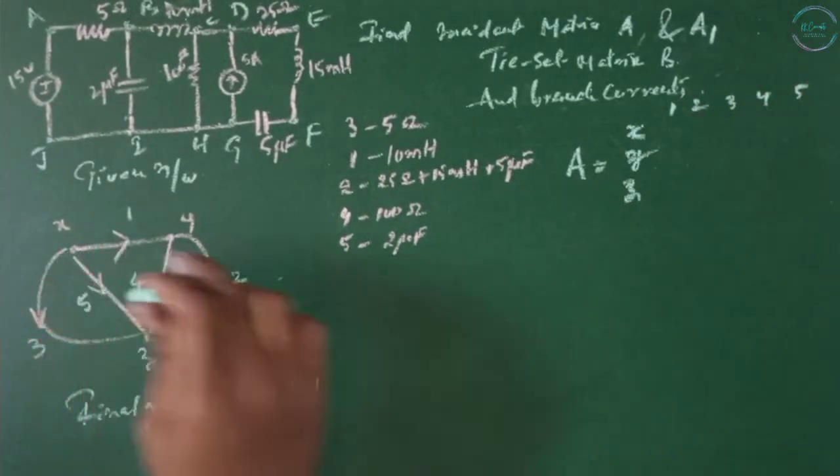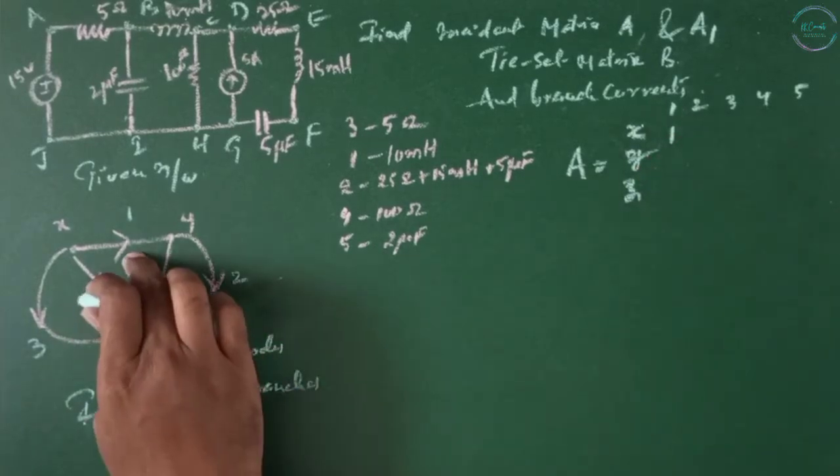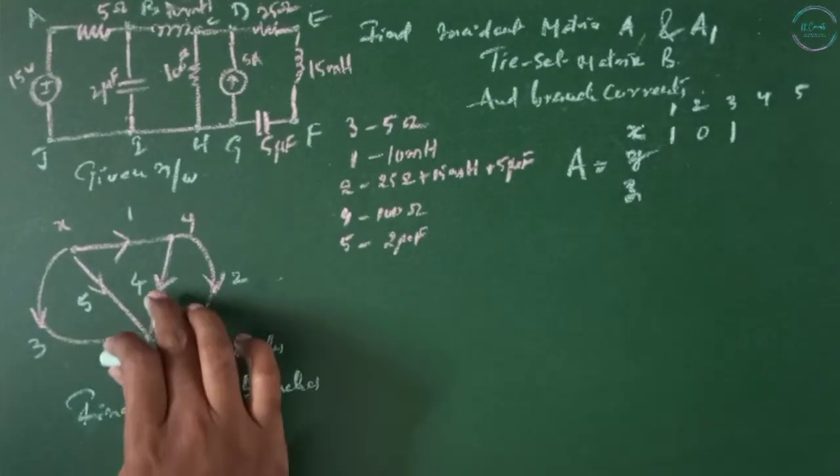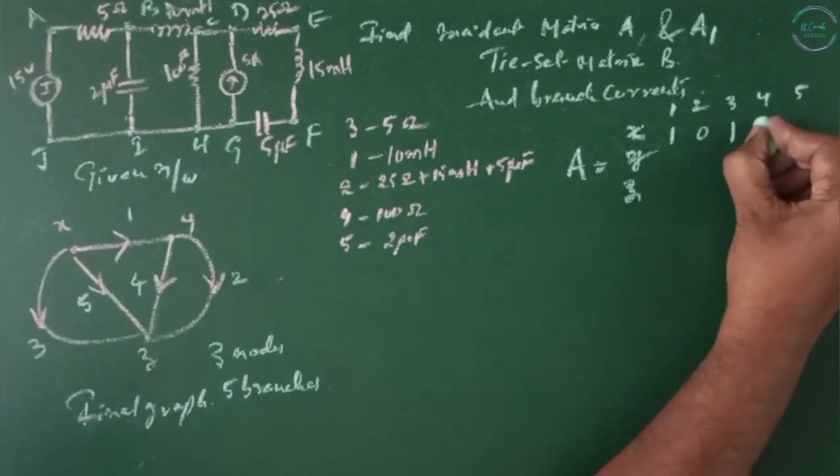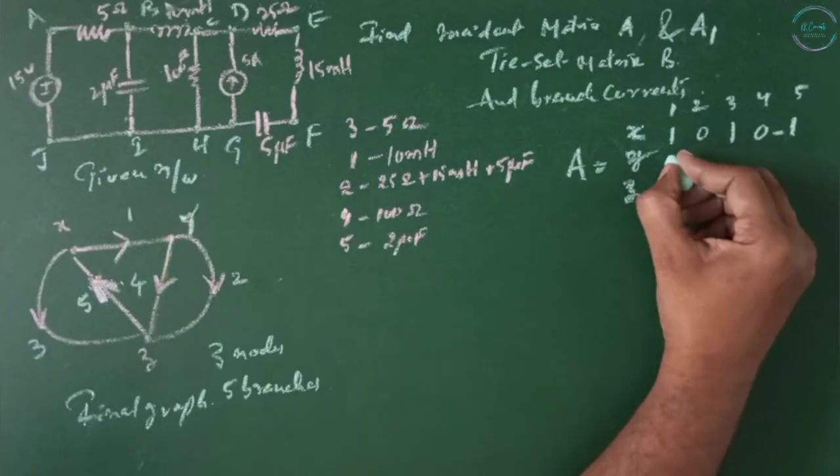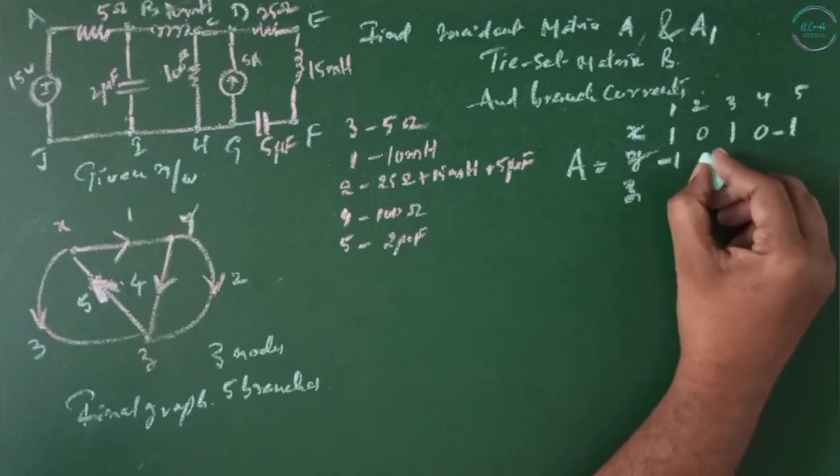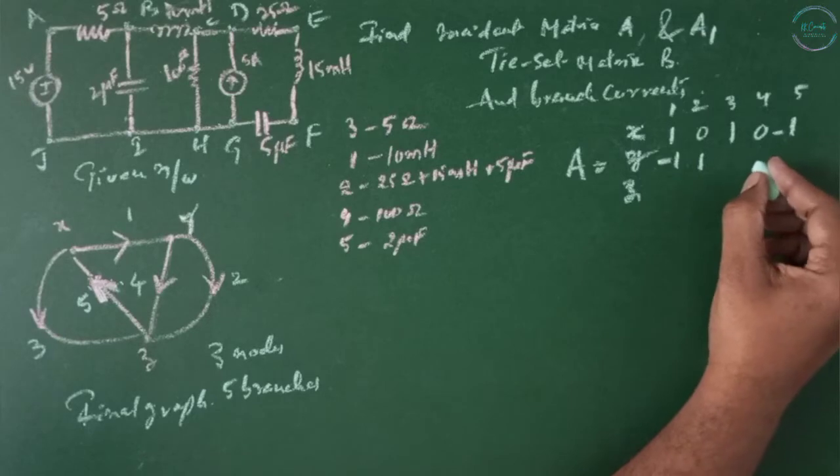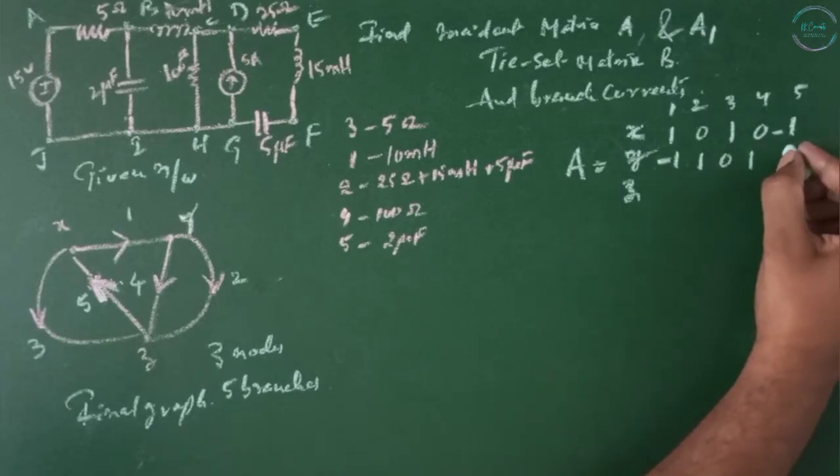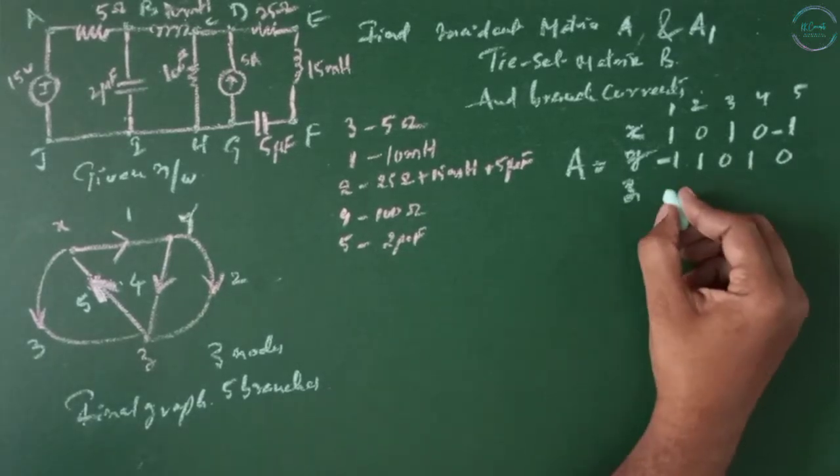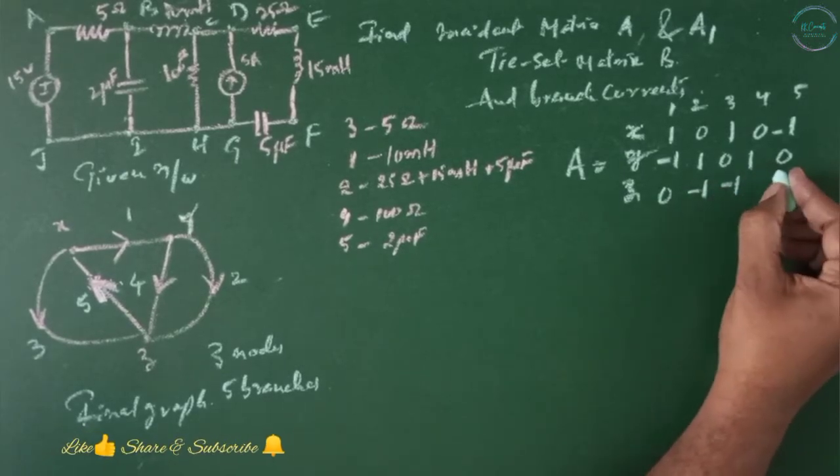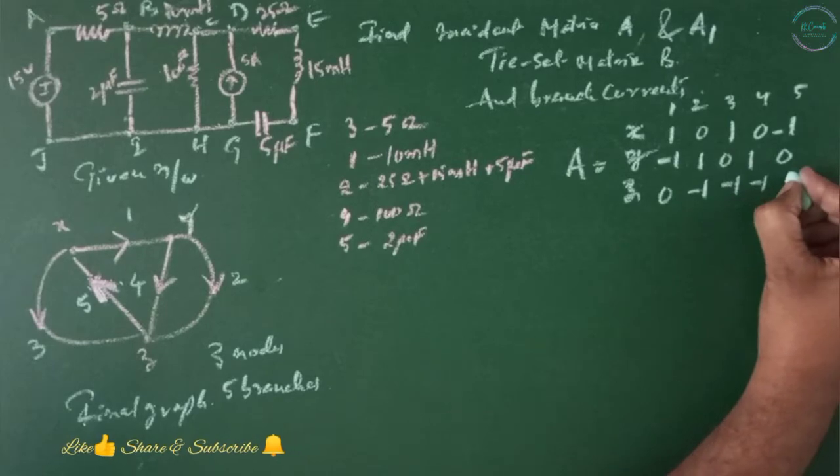Branch 1 is going away from X so 1 and branch 2 is not at all connected to X. Branch 3 going away from X. Branch 4 is not connected to X. First branch coming towards node Y. The second branch going away from Y. Third one is not related to Y. Fourth one is going away from Y, not related to Y. In Z, 1 is not related and 2 is coming, 3 is also coming, 4 is also coming, 5 is going away.